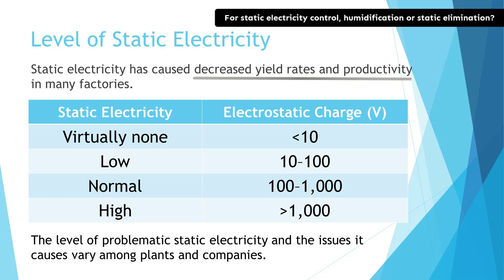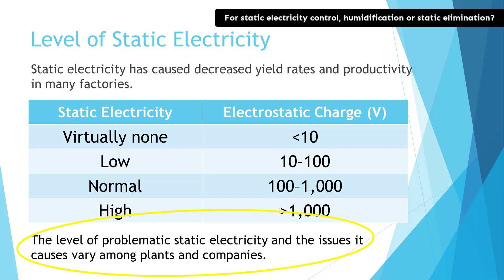For example, in printing, the paper gets stuck together by static electricity. Or, in a plant manufacturing plastic products, static electricity causes dust to adhere to the products. So, depending on what kind of products they are making, to what extent the static electricity should be reduced will differ.